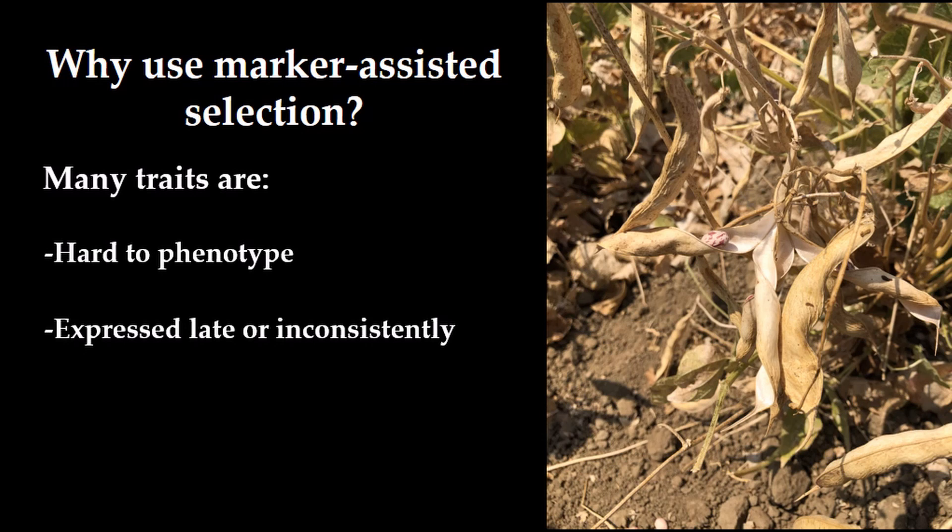They may also be affected by allelic dominance, making it hard to distinguish heterozygous breeding lines from homozygous dominant individuals. Marker-assisted selection overcomes many of these obstacles.